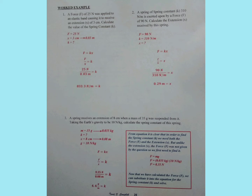Next, we write the formula: F is equal to KX. We are finding X, so X must become the subject. Therefore, X is equal to F over K. After which, you substitute your values: 90 Newtons divided by 310 Newtons per meter. The Newton at the top will cancel the Newton at the bottom, leaving your answer to be 0.29 meters. That's the extension.